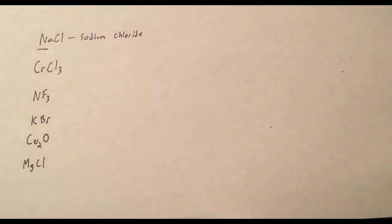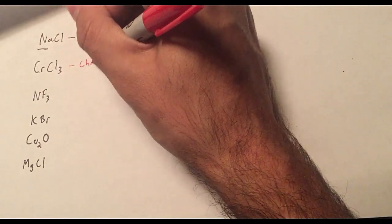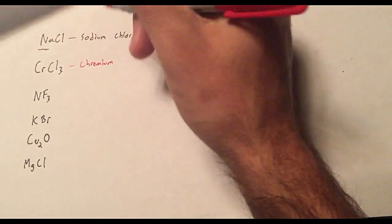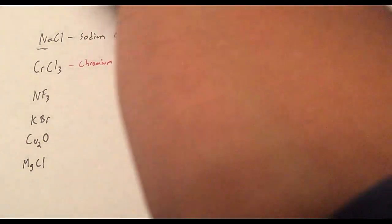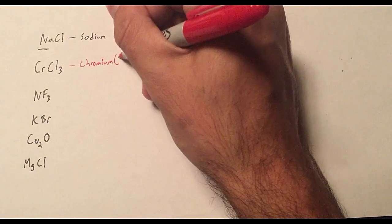So this compound here is type two and therefore it's going to be chromium. We follow our template, right? The name, Roman numerals, which we said was three,